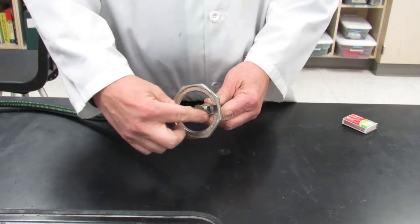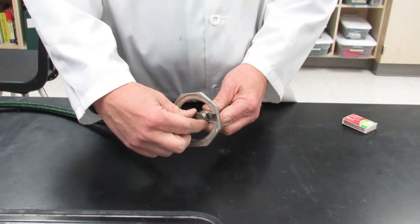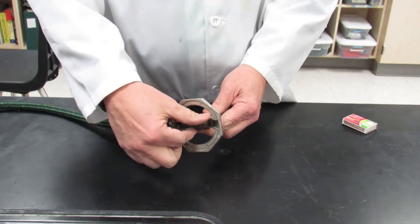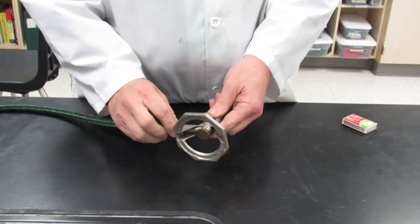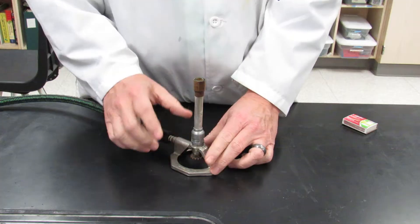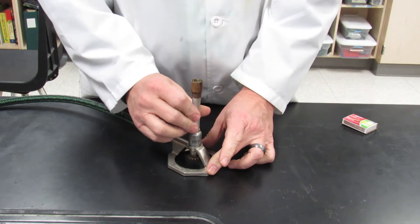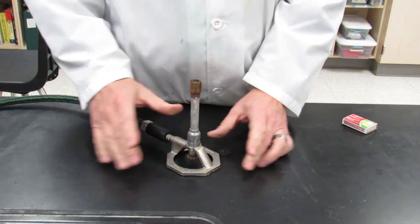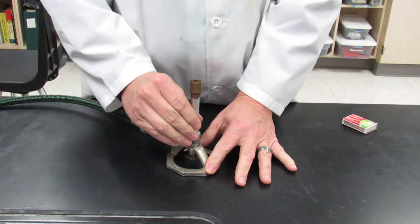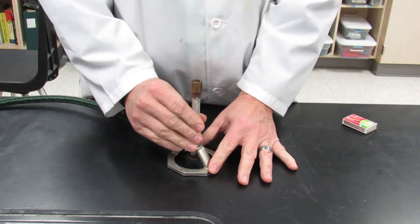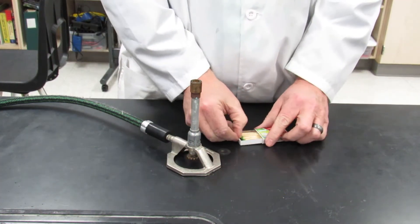When adjusting the Bunsen burner, take the valve on the bottom, which controls the amount of gas, turn it all the way clockwise, and then turn about a half turn counterclockwise. The barrel is also adjustable, so tighten that all the way clockwise until it stops. Make sure it's snug. Now it's time to light it.